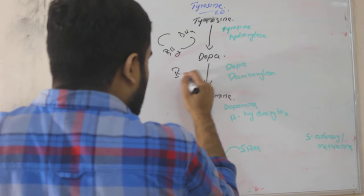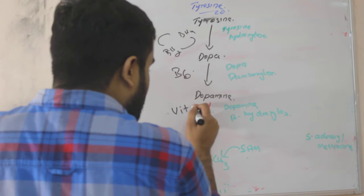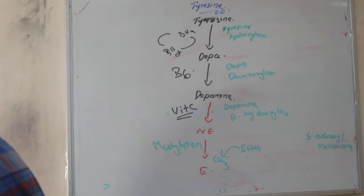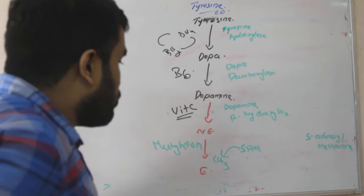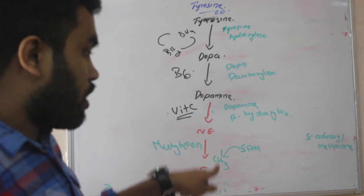Here in decarboxylase the coenzyme is B6. Here the coenzyme is vitamin C, very important. Dopamine to norepinephrine, the coenzyme is vitamin C. So this is how the catecholamines are formed - dopamine, norepinephrine, epinephrine.